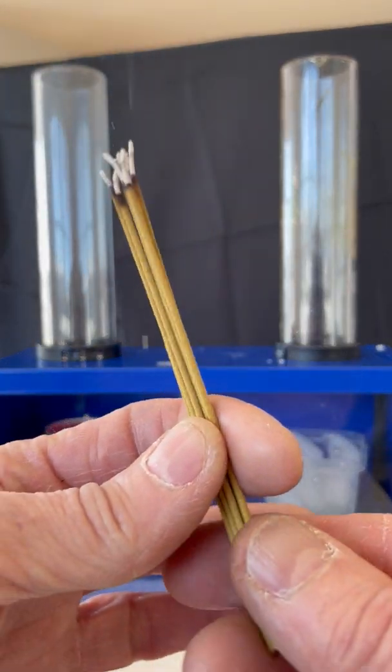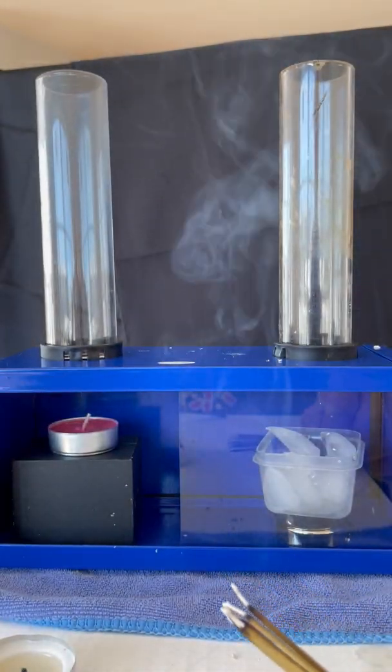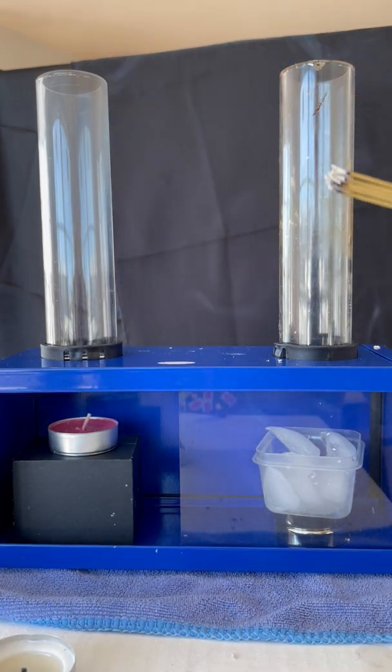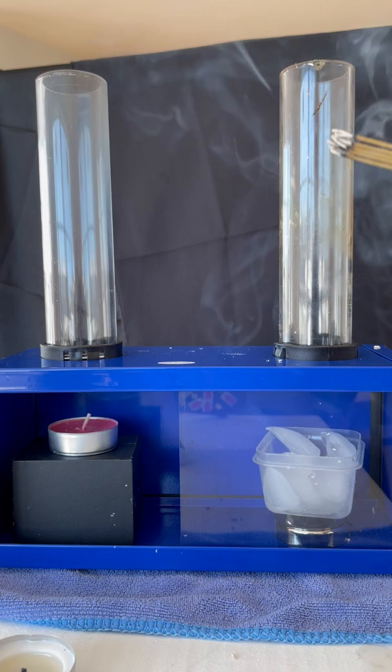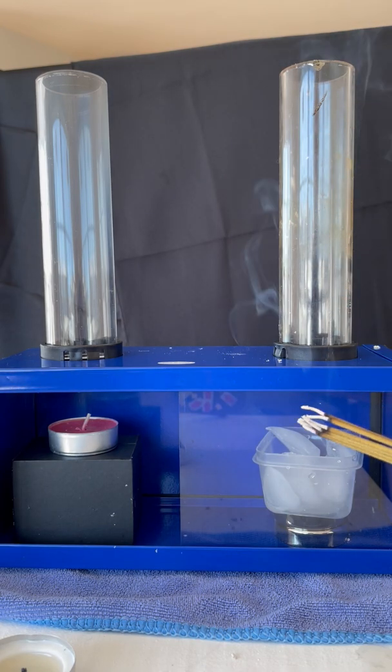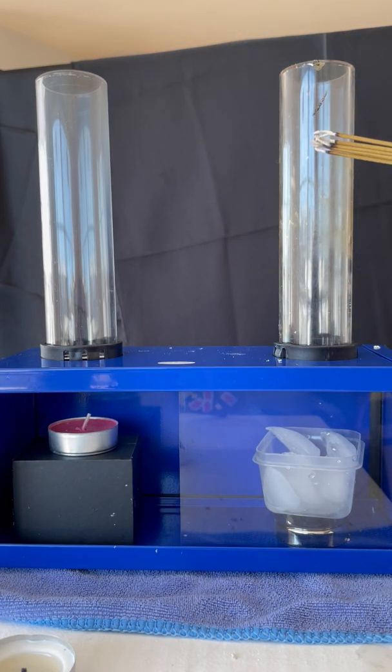All right, here we go. Convection box experiment, two-chimney experiment. We have a chimney on this side. It's messy, as you can see with the smoke. I was dreading this demonstration because it is a messy one. The ashes from the smoke are creating a discoloration.